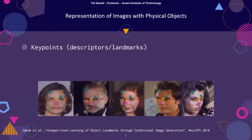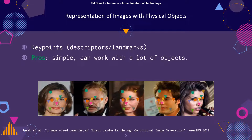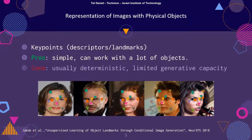Lastly, an alternative representation is keypoints, where salient areas in the image are assigned a positional descriptor. This simple representation has a clear meaning and can handle many objects. However, learned keypoints usually have no probabilistic interpretation and have limited generative capacity.